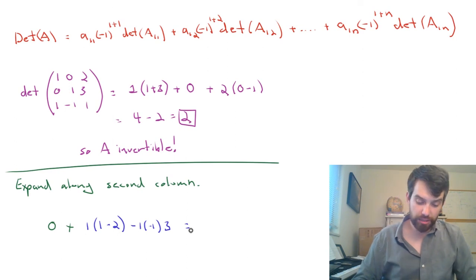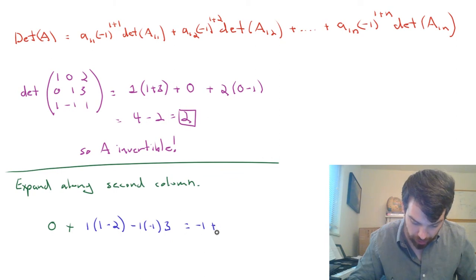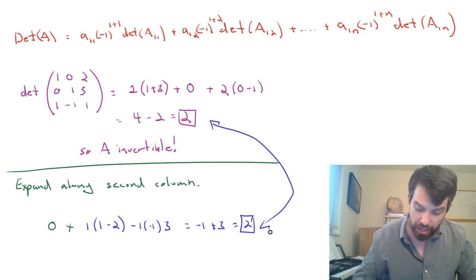What do we get? It looks like a minus 1 in the first scenario, plus a 3, so I get 2. Which is the same value, of course, that we had computed the other way around.